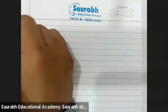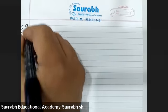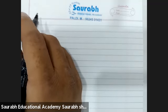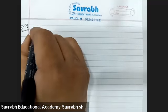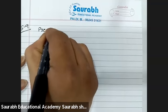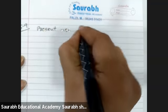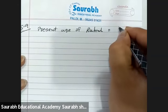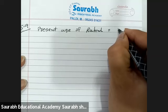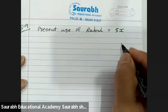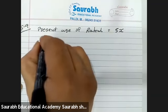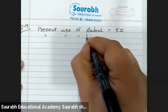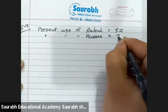Now from question number 9: the ages of Rahul and Haroon are in the ratio 5 to 7. We should write the present age of Rahul. Since we have a ratio, we convert to x form. We assume the present age of Rahul is 5x and the present age of Haroon is 7x.